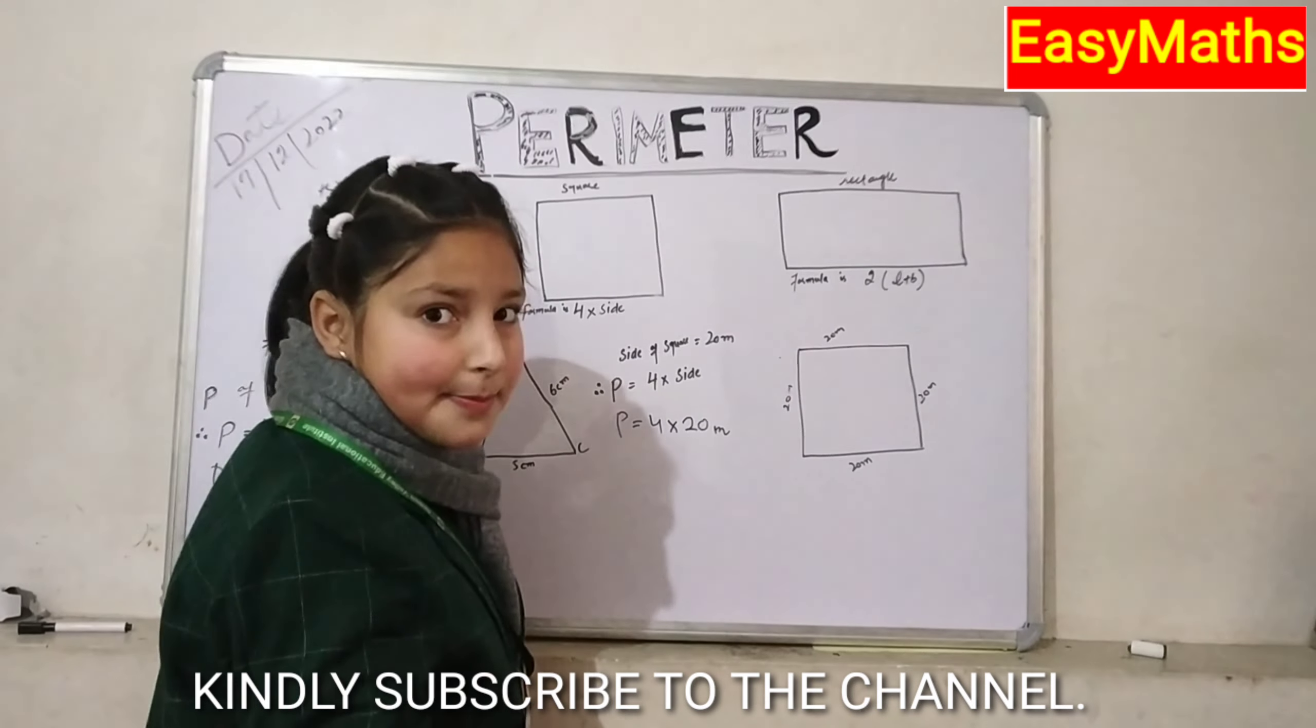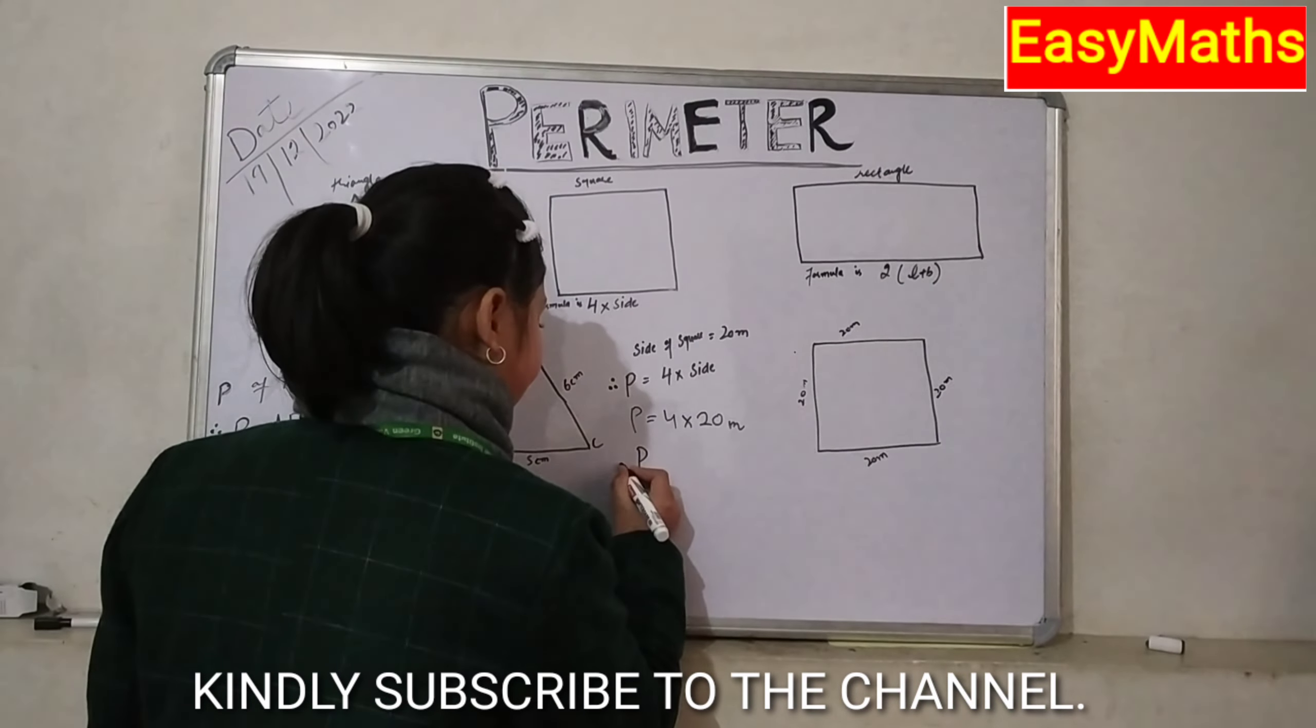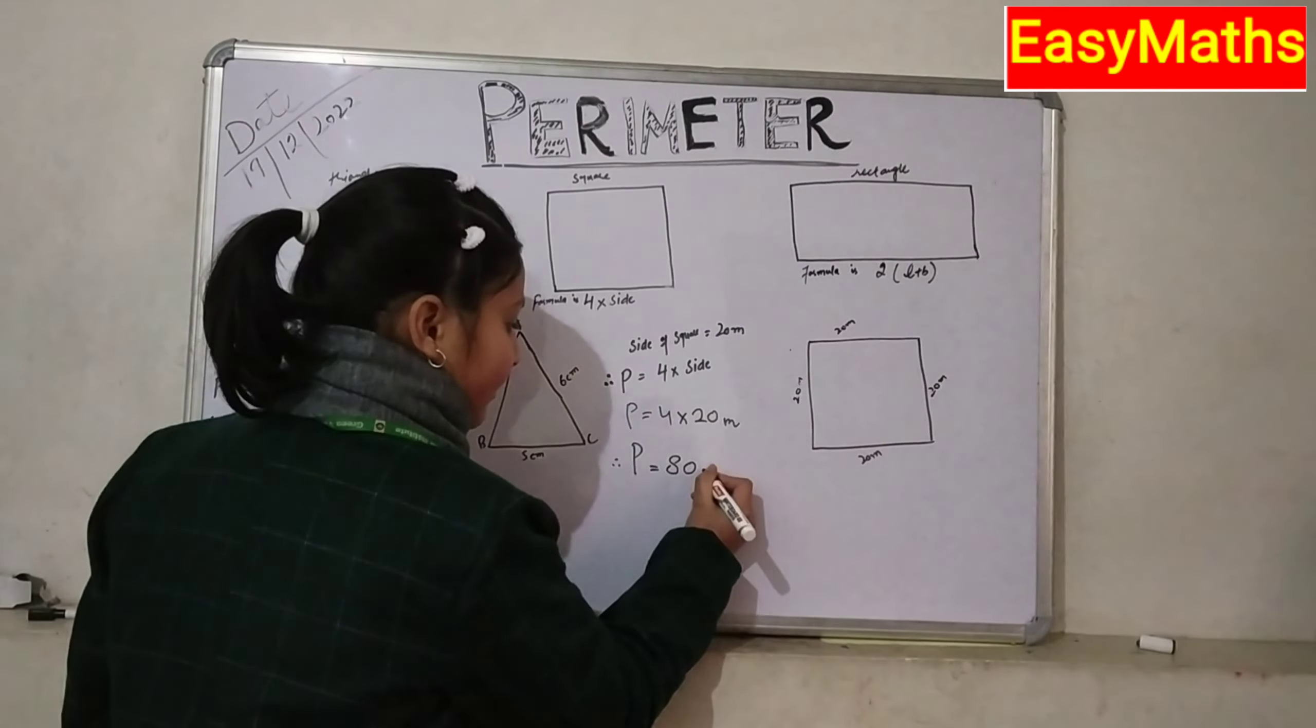Now, we will multiply them. Therefore, perimeter is equal to 80 meters.